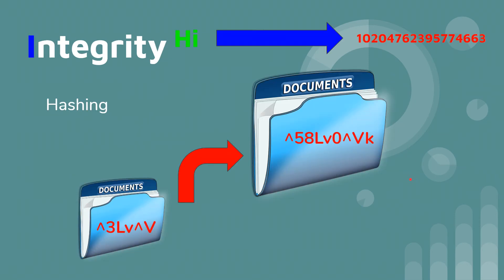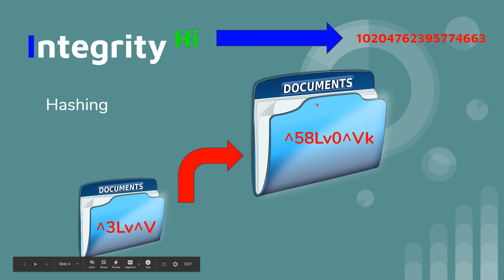With integrity, hashing is the key concept. A hash is essentially a description of a document — a one-way function with a fixed output. If a file changes, its hash changes, giving it a different description. Systems use this to check files for unauthorized changes.